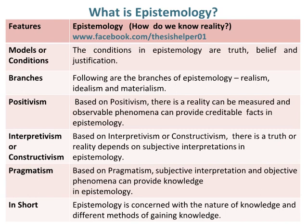Based on positivism, there is a reality that can be measured, and observable phenomena can provide credible facts in epistemology. Based on interpretivism or constructivism, truth or reality depends on subjective interpretations in epistemology.